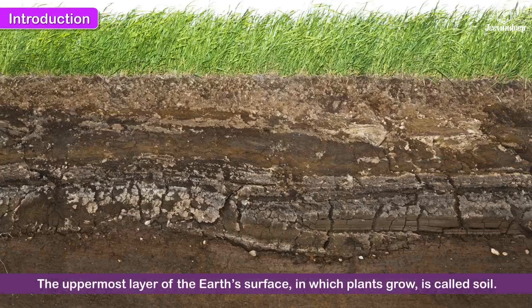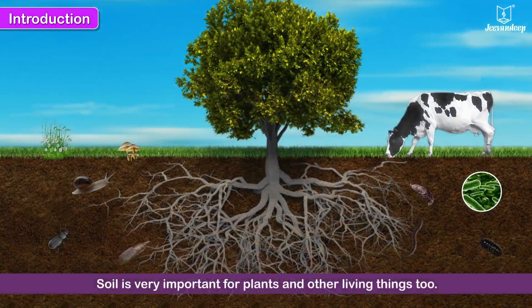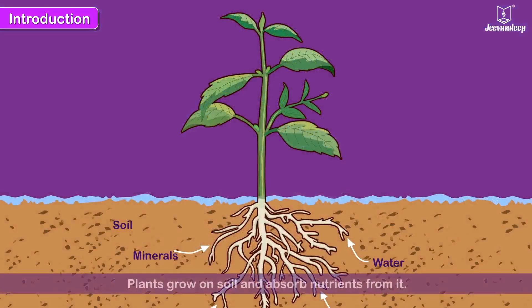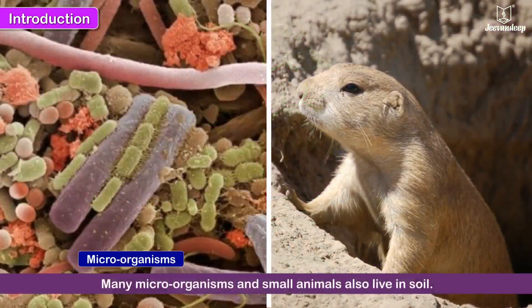The uppermost layer of the earth's surface in which plants grow is called soil. Soil is very important for plants and other living things too. Plants grow on soil and absorb nutrients from it. Many microorganisms and small animals also live in soil.